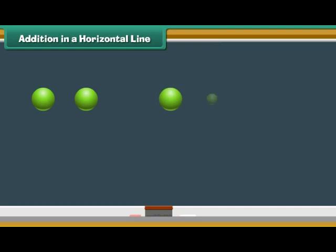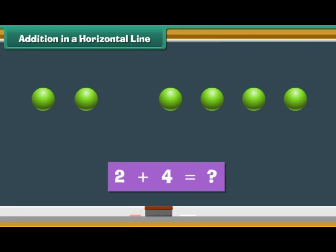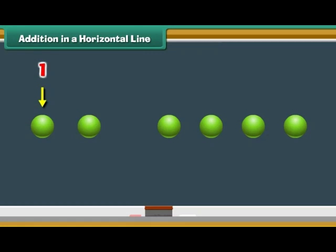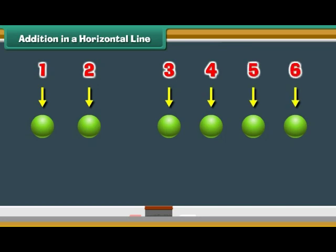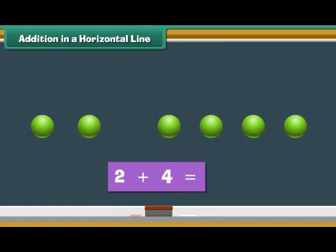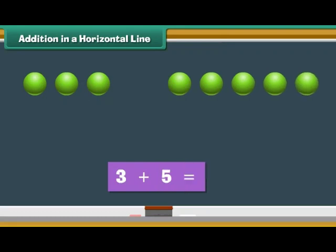Addition in a horizontal line — let us now use dots to add numbers horizontally. Look at the screen. There are two dots on the left and four dots on the right. What is two plus four? Count the total number of dots: one, two, three, four, five, six. Therefore, two plus four is six. What is three plus five? Count the dots.